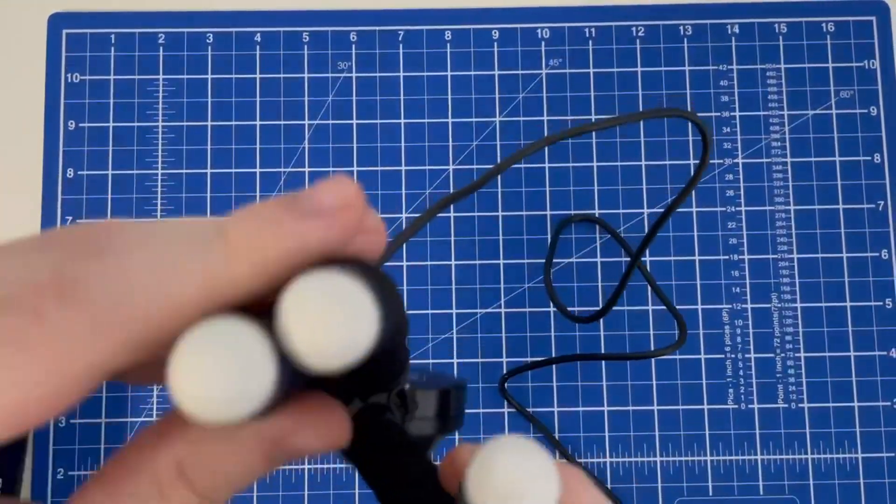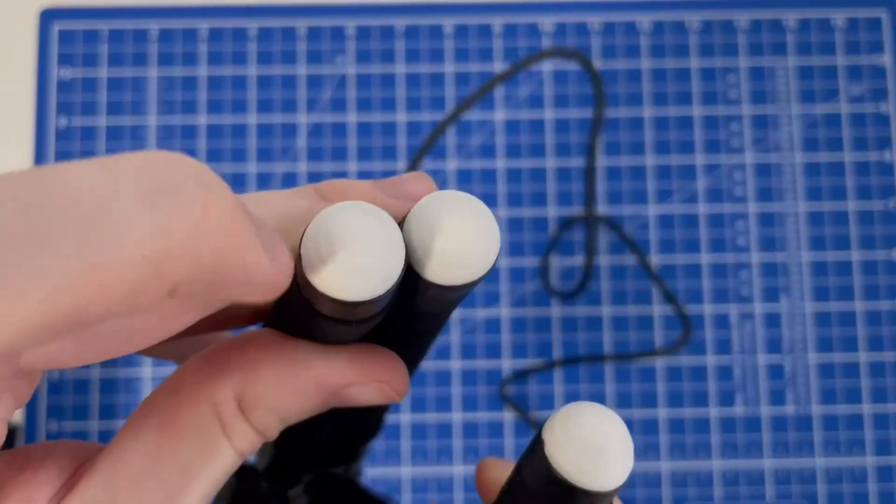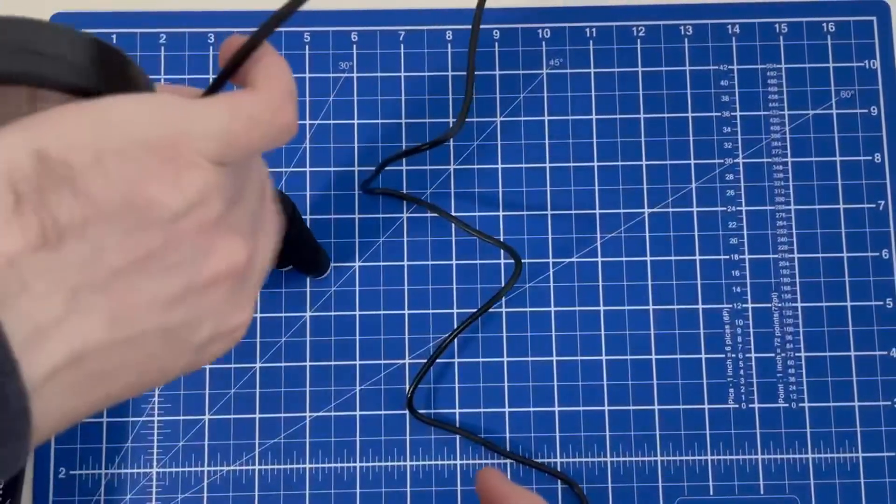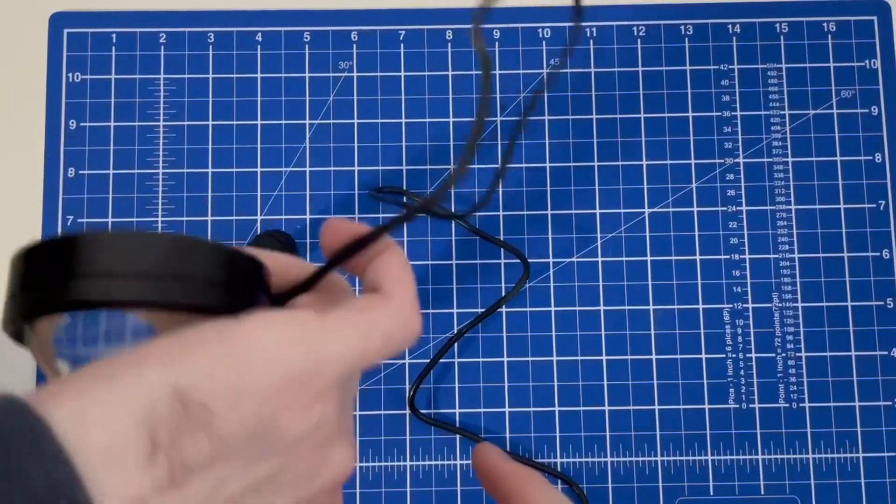They also have little rubber feet on them, so if the tripod is standing up normally it won't slide or move.